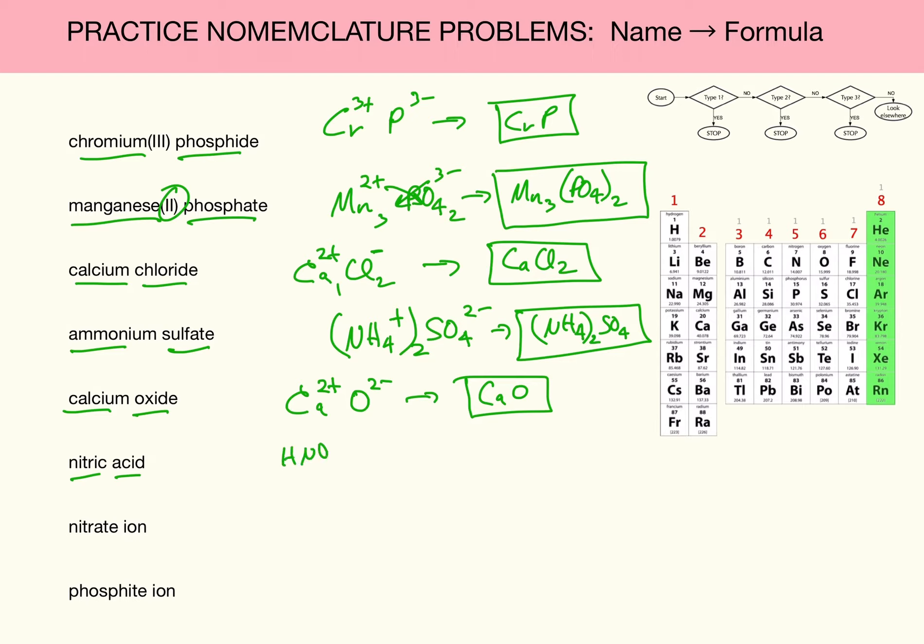Nitric acid. That's an easy one because that was a memory acid, one of the seven I was supposed to memorize. Nitrate ion. That's the -ate version of -ic acid. How do we get the nitrate? We knock the H off. And for every H we drop off, we add a minus sign. So NO3 with a minus sign would be nitrate ion.